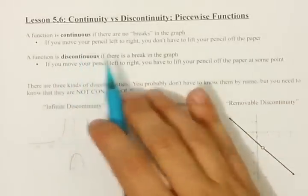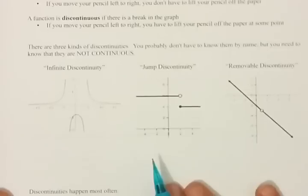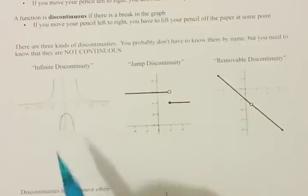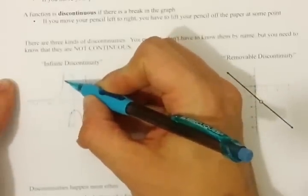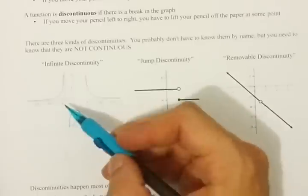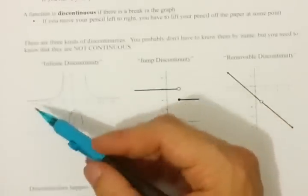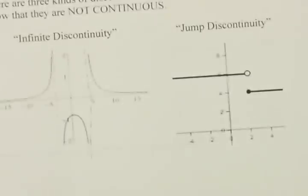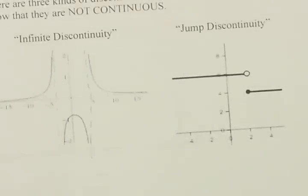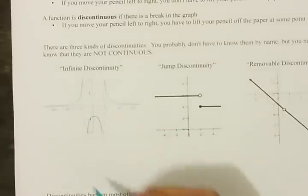A function is discontinuous if you do have to lift the pencil — if there is a break in the graph. These are the three types of discontinuities. We have what's called an infinite discontinuity, or an asymptote, where at x equals negative three, it goes up to positive infinity and down to negative infinity, and you have to lift your pencil to draw those two curves separately. This curve has two infinite discontinuities because there are two vertical asymptotes. Horizontal asymptotes mean nothing for discontinuities. Infinite discontinuity is just a fancy word for asymptote.